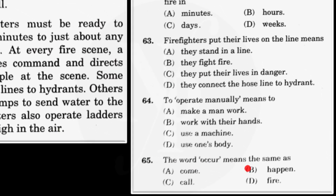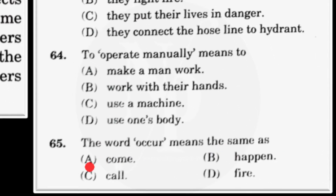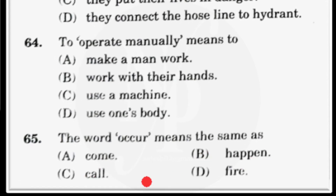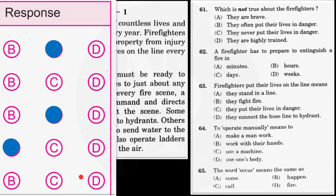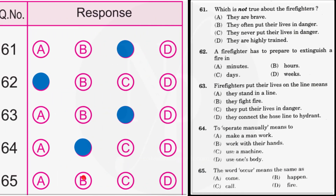Question number 65: the word 'occur' means the same as — A: come, B: happen, C: call, D: fire. 'Occur' means 'happen.' So we mark answer option B as the correct answer for question number 65 on the OMR answer sheet.